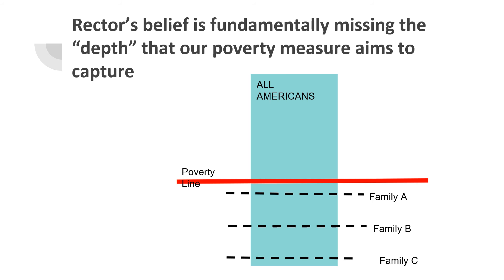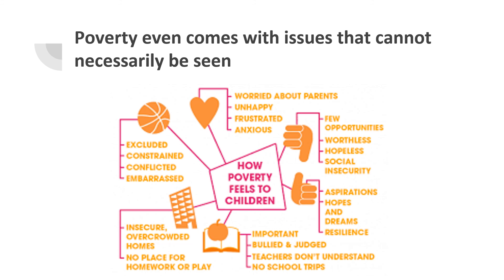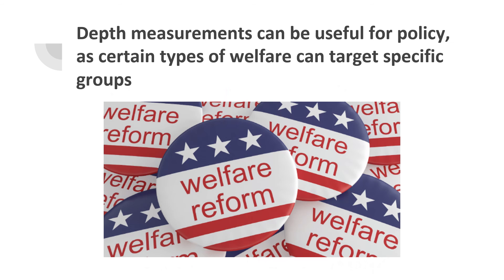However, we believe that Rector is missing the point. Poverty takes on many different forms and comes with varying consequences. By looking at depth of poverty, it is easier to understand how some families are doing better than others. Besides material wealth, poverty can come with intangibles such as emotional distress, poor mental and physical health, or social exclusion — factors that extend far beyond any poverty measure. Depth measurements are also useful for policymakers, as certain types of welfare can be chosen to target specific groups and be more effective at combating poverty.